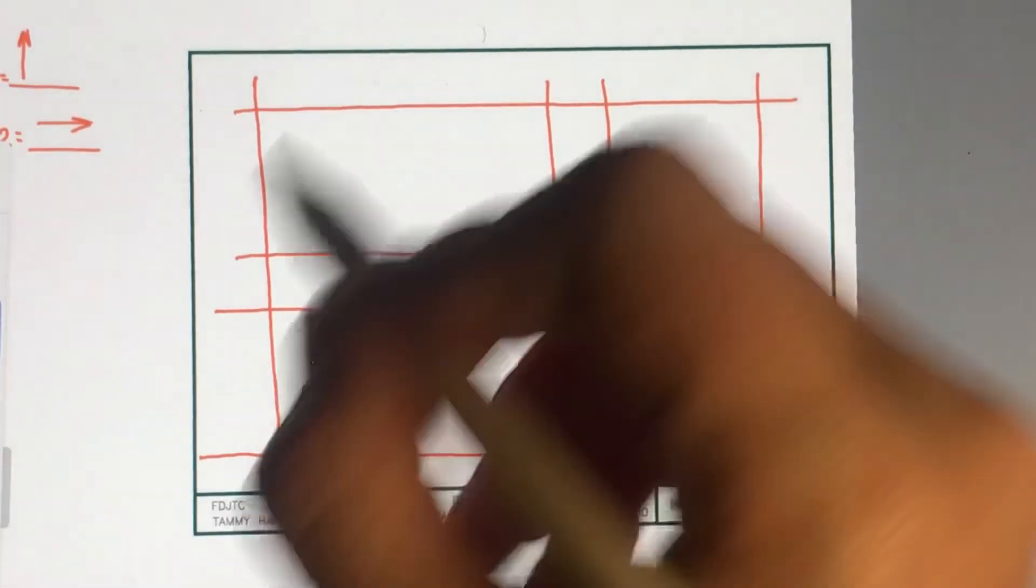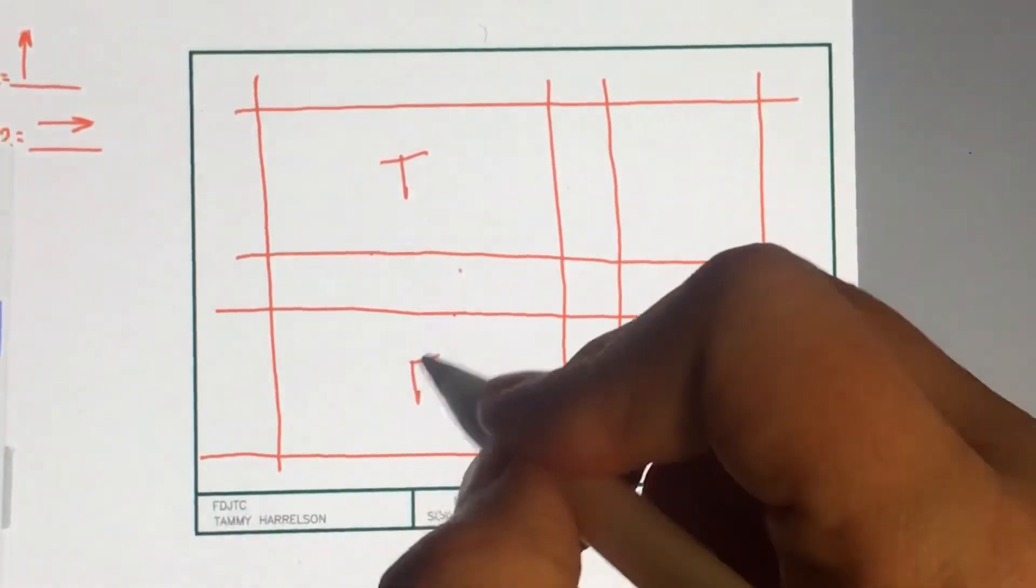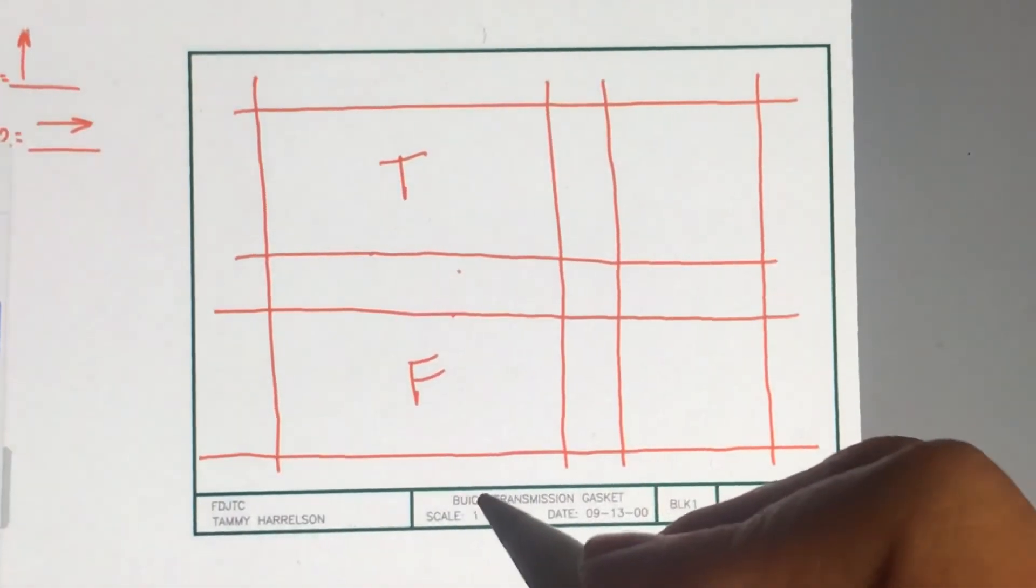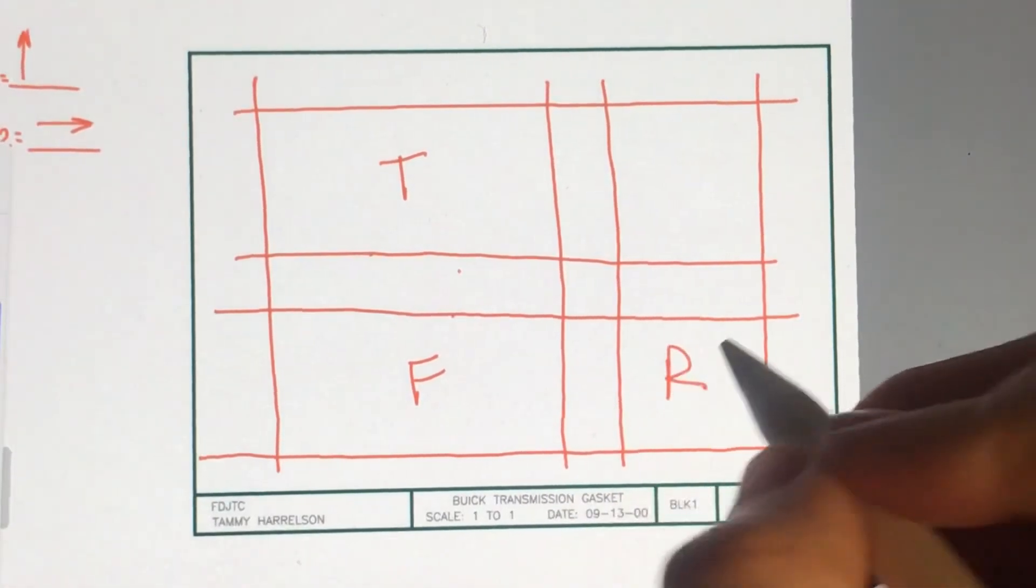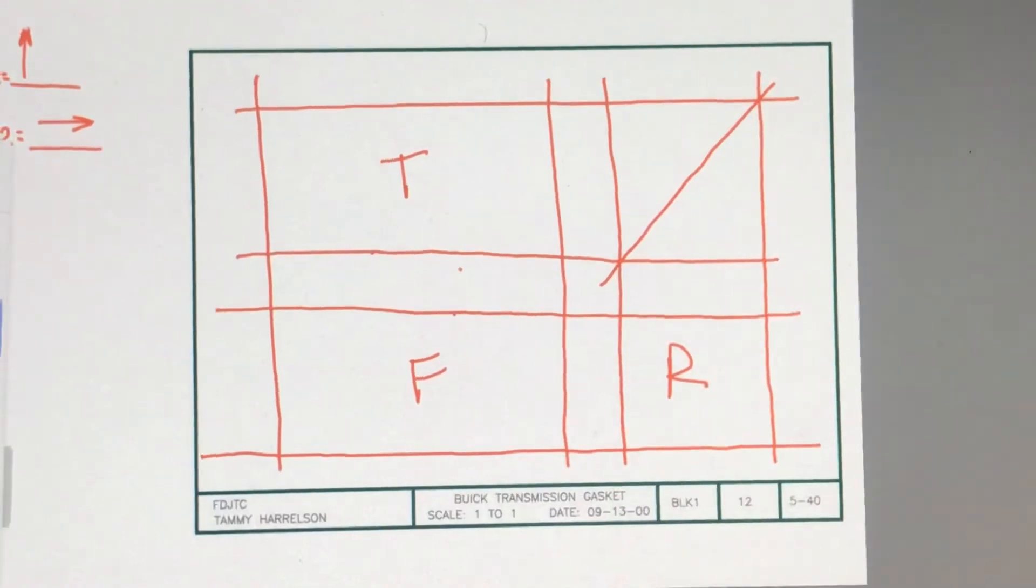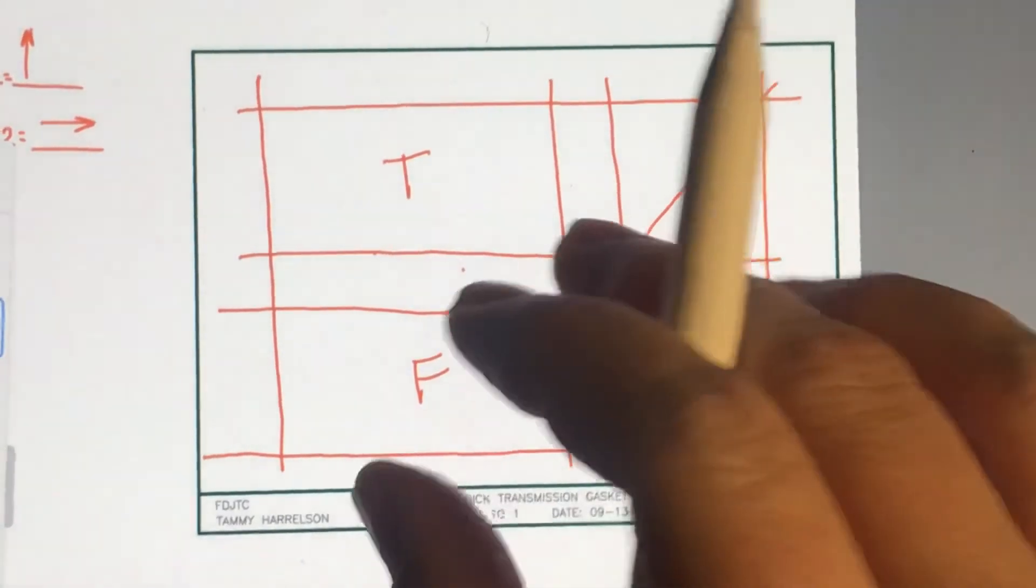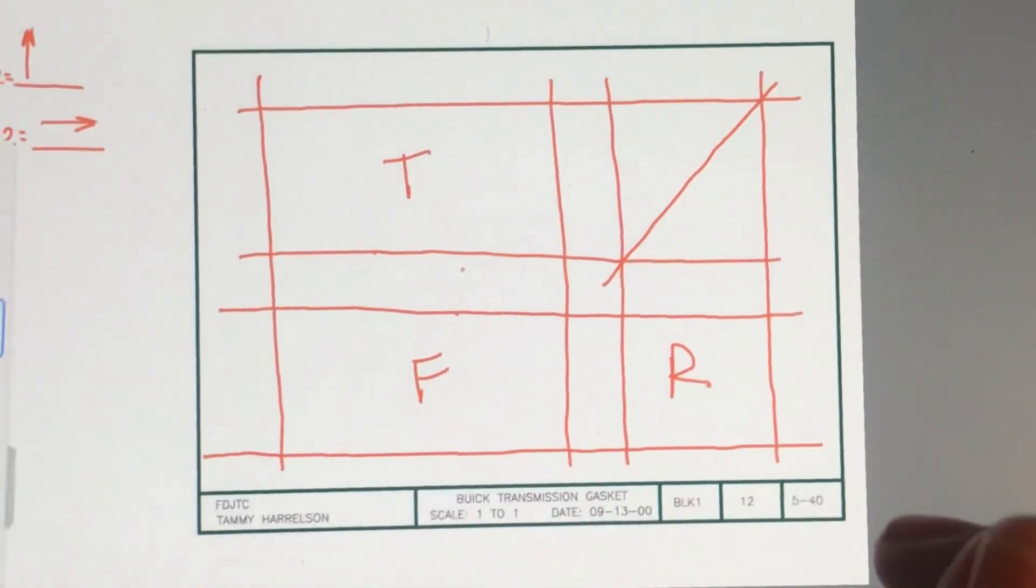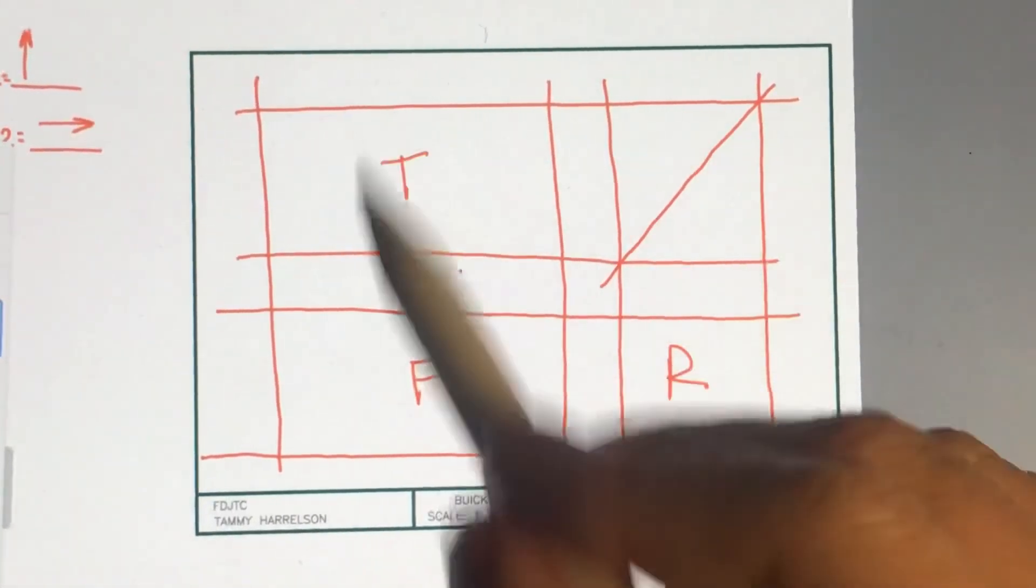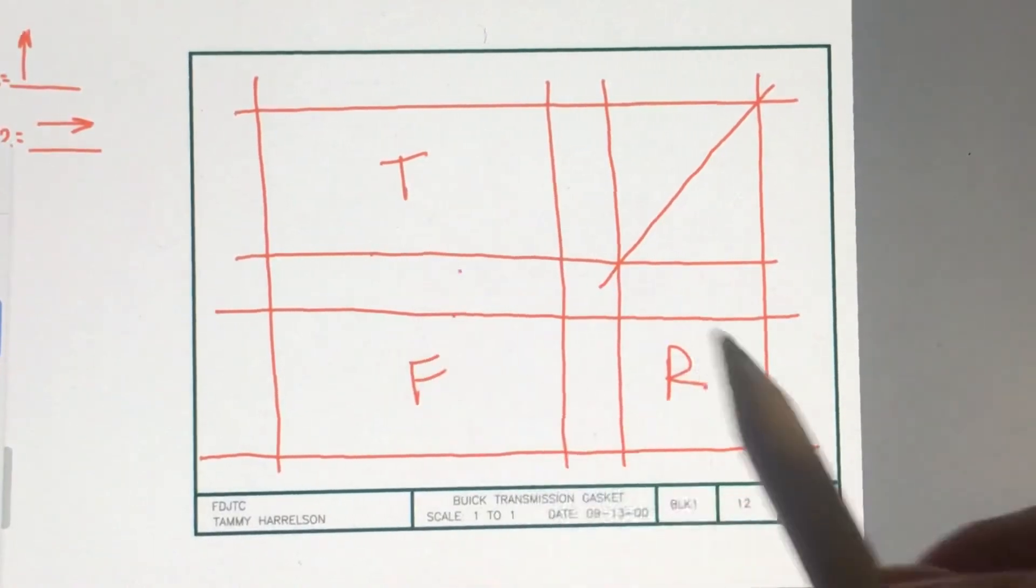So that formula has laid out the top, the front, and the right side view. And then this is your projection box. So the formula will do the work for you. So once you get to this point, you can trim objects out and you can start drawing the views.